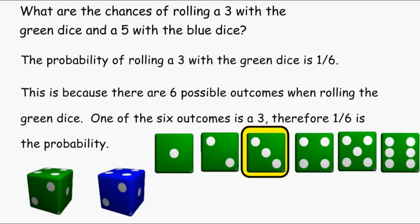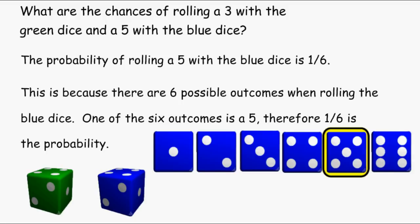So therefore, the probability of rolling a 3 with the green dice is 1 sixth. And concerning the blue dice, we also have six possible outcomes when we roll the blue dice and the number 5 represents one of those possible six outcomes.